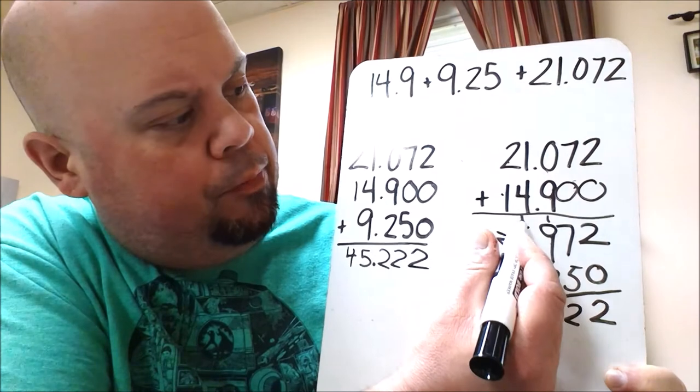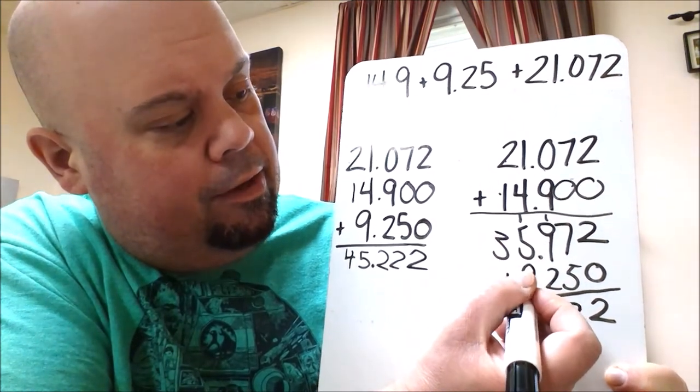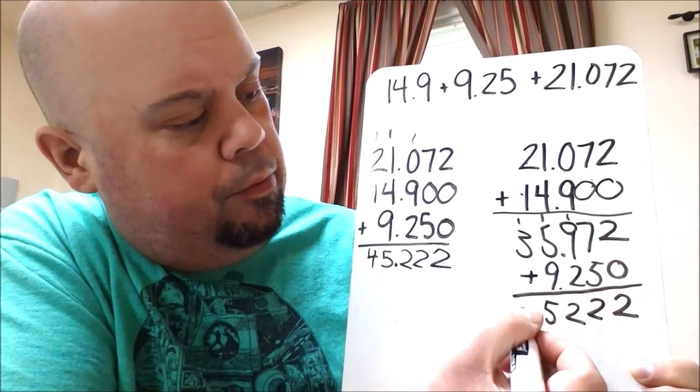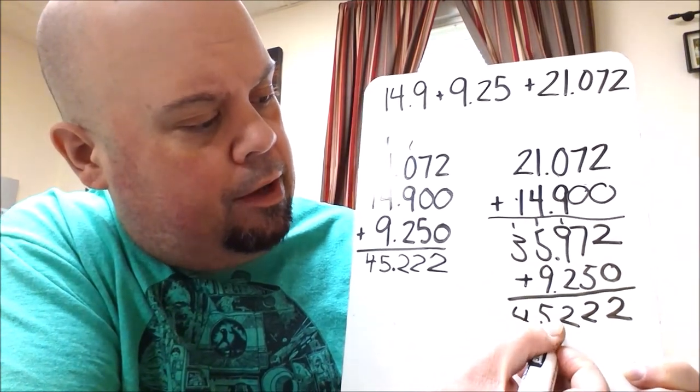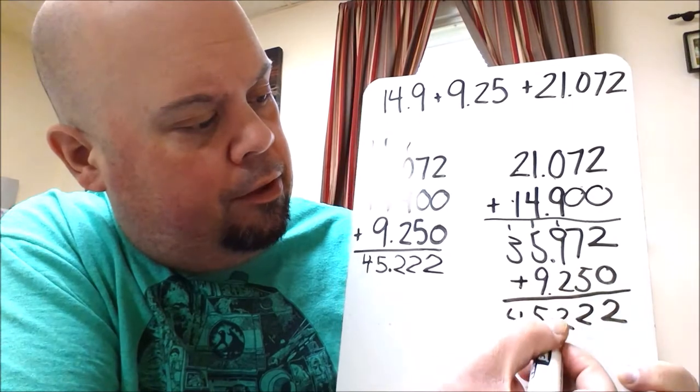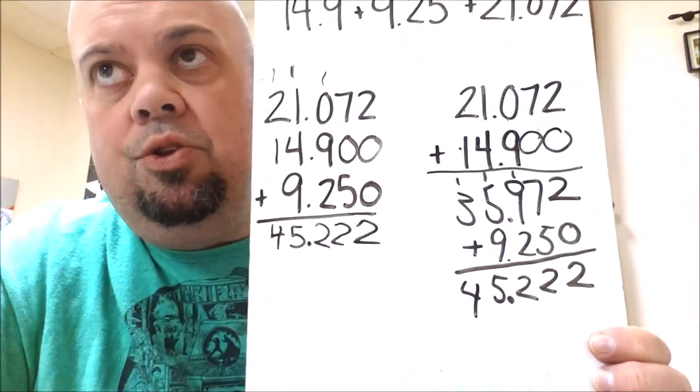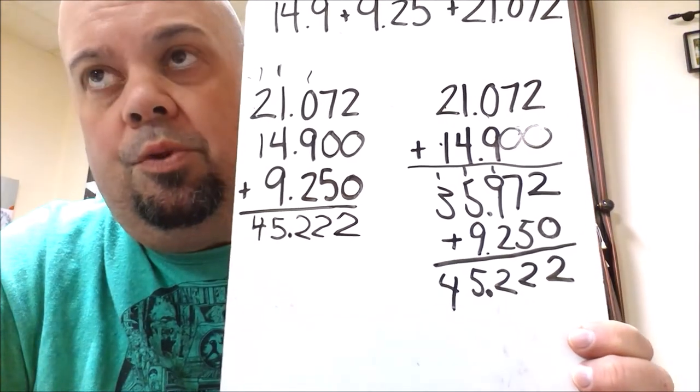Regroup your 1. 1 plus 5 is 6. Plus 9 is 15. Regroup your 1. 1 plus 3 is 4. And then your decimal is in line with all those other decimals. So our answer again is 45 and 222 thousandths.